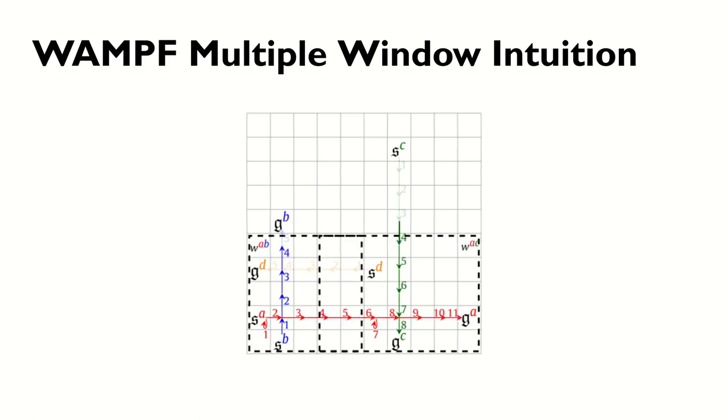To improve this path, WAMPF grows both windows. But now we have a problem. Agent A enters the second window at time 4, but it leaves the first window at time 6. The first window could re-plan A's path, messing with the second window's start. So these two windows must be merged, and a repair generated in the joint space of agents A, B, and C. This again generates a valid and likely higher-quality global path, and can continue until the window encapsulates the global search for the three agents involved.